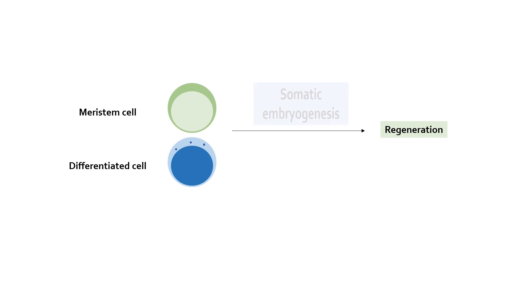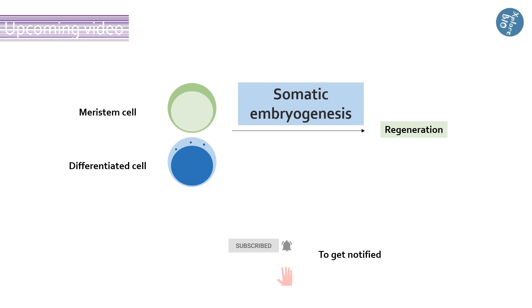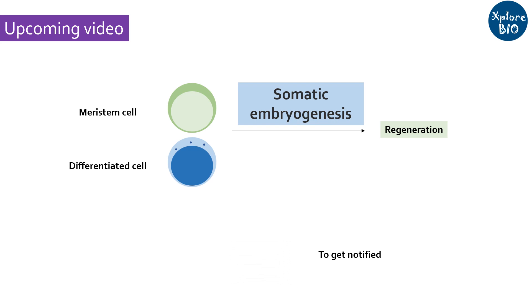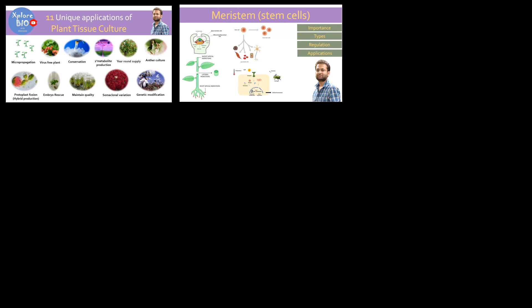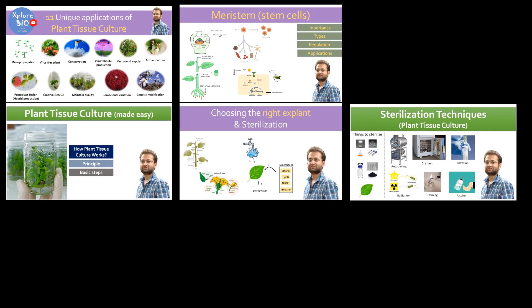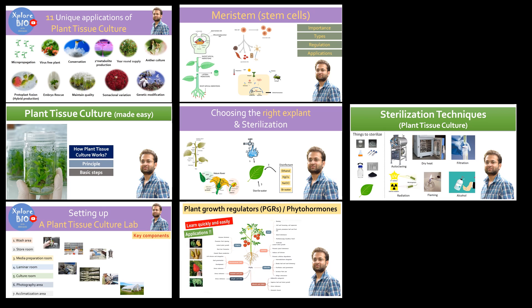Somatic embryogenesis is another important way to regenerate plants, which I will be covering in my next video. If you want to learn more about plant tissue culture, types of explant, sterilization procedure, totipotency, and how to set up a plant tissue culture laboratory, I have made a series of videos on them. Do check out my playlist on research and publishing, markers, techniques, genomics, and others.